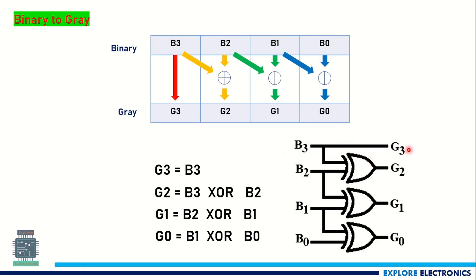This is how we get the logical circuit as well. B3 goes to G3 directly. B3 and B2 are XORed to get G2. B2 and B1 are XORed to get G1. B1 and B0 XORed gives G0. This is the binary to gray conversion.